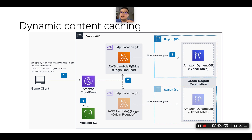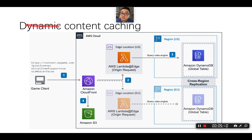As I mentioned earlier, I'm going to talk about dynamic content caching. Usually, we only consider the CDN for static content caching — for example, images, files, music files, etc. However, how are we going to cache dynamic content, and what is necessary for that?